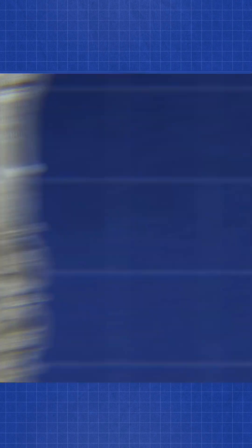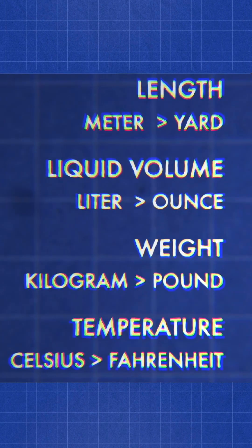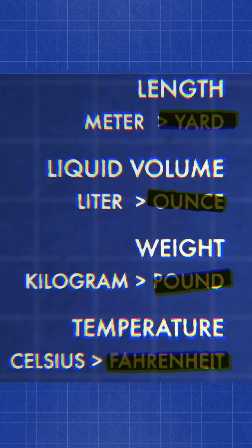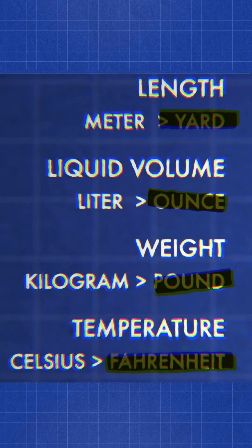They broke all measurements down into units of 10. Meters replaced the yard, kilometers replaced the mile, and kilograms replaced the pound. And voila, the metric system was born.